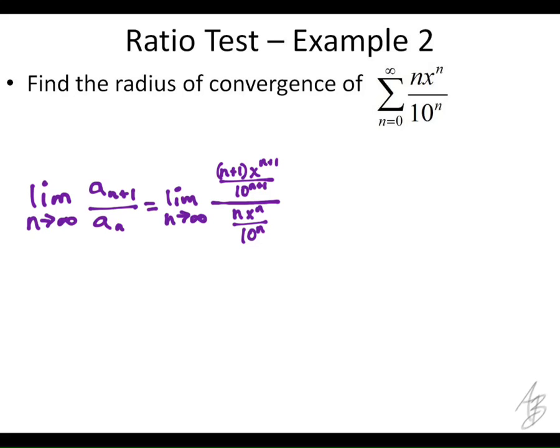You show the intermediate steps and the setup. So this limit here is going to simplify by multiplying by the reciprocal. We get the limit as n approaches infinity of n plus 1 x to the n plus 1 over 10 to the n plus 1.